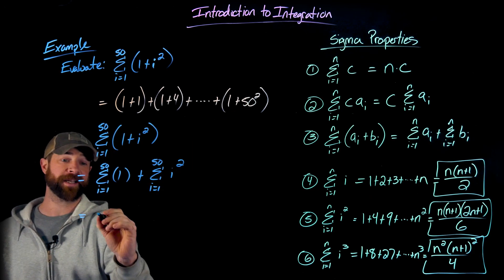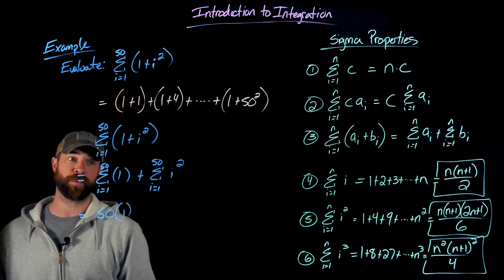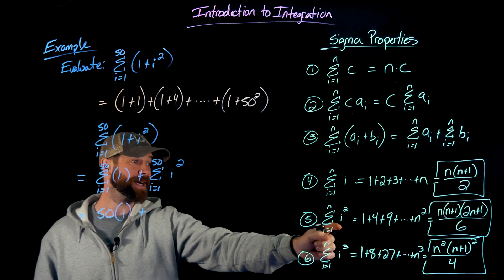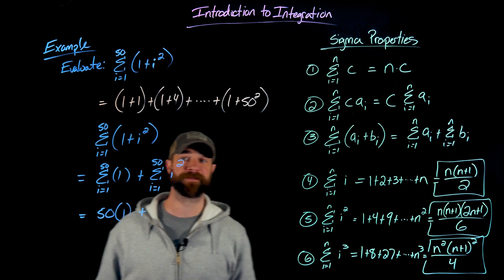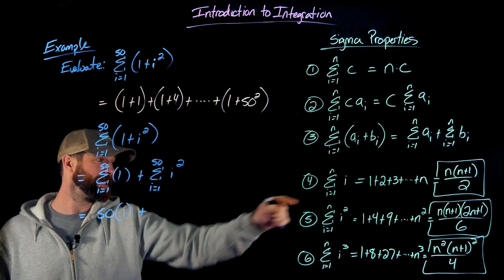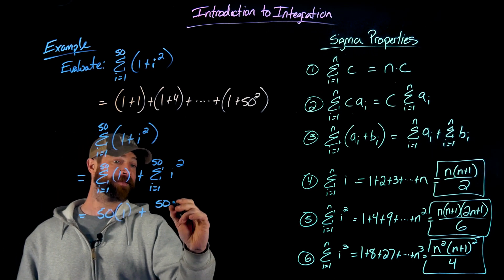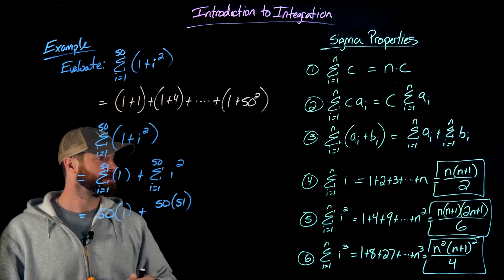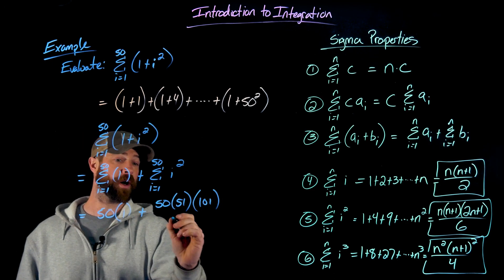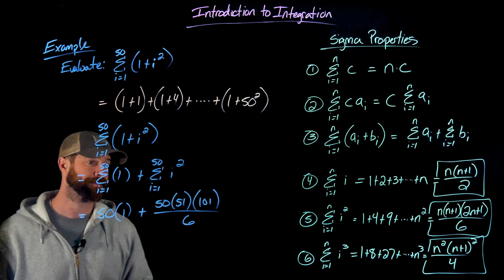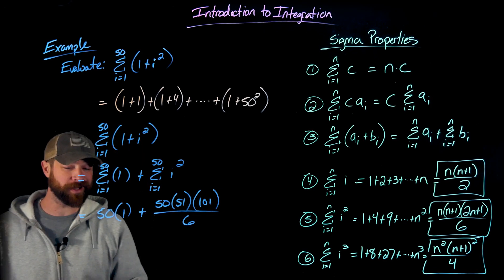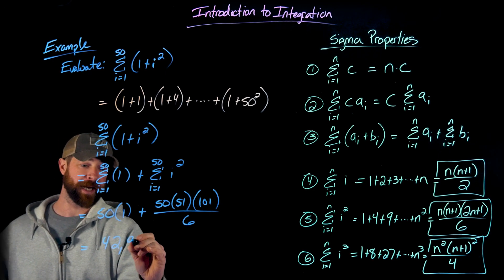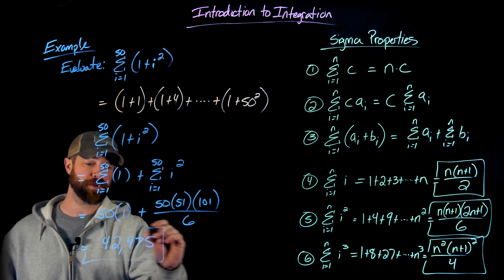And in the second sum, I'm using the i squared summation, where n in this case is 50. So I put 50 into that formula. I'll get 50 times 50 plus 1, which is just 51, times 2 times 50 plus 1, which would be 101, all divided by 6. Then I just plug that into my calculator to figure out that value and I got 42,975 as the value of that summation.